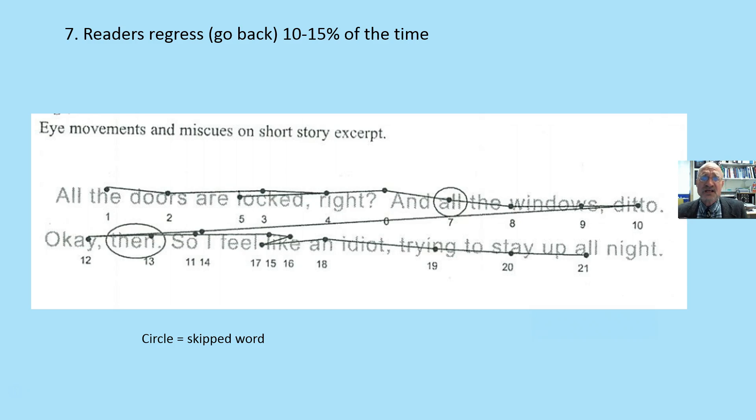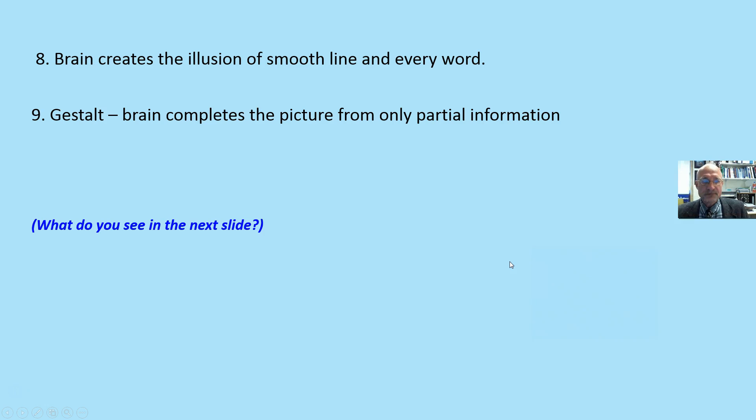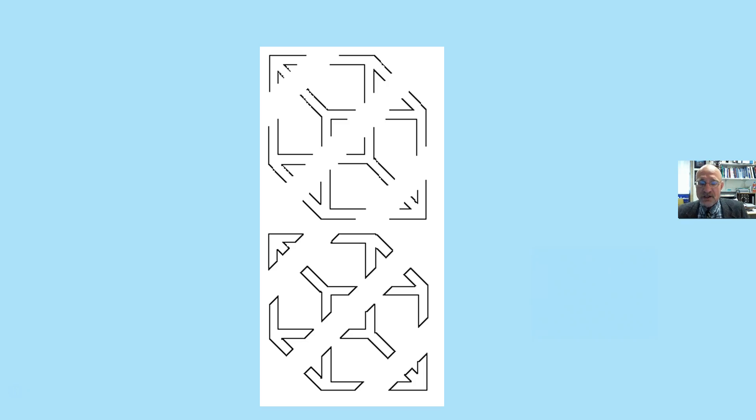Regression occurs 10% to 15% of the time. And again, that's going back to help the brain figure out what that is. Here is the order, and you can see some of the regressions there. The circle represents words that are skipped. The brain simply creates this illusion of a smooth line and reading every word. It's this gestalt where the brain completes the picture from only partial information, just like your brain does there.